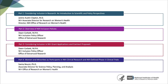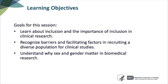This is the first of a four-part series on inclusion in clinical research that provides an overview of the importance of inclusion in research, data on participants in clinical trials, policies, and how to address inclusion in grant applications and contracts. The goals for this session are to learn about inclusion and the importance of inclusion in clinical research, recognize barriers and facilitating factors in recruiting a diverse population for clinical studies, and understand why sex and gender matter in biomedical research.